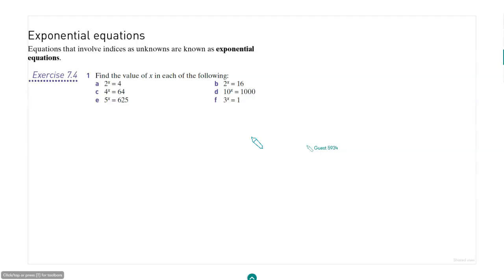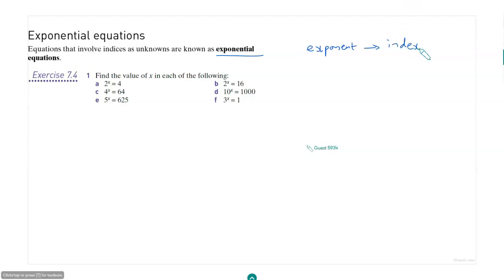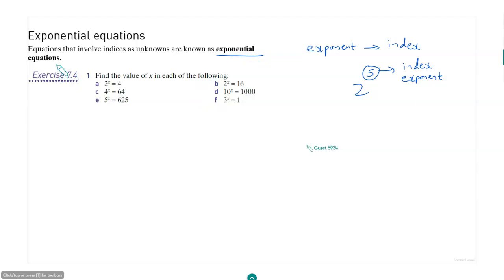Now, why is it called exponential equations? The word 'exponential' contains the word 'exponent,' and exponent is another word for index. So when you say 2 to the power 5, the 5 is called the index — and 5 is also called the exponent. Exponent is just another word for index, and that's why these are called exponential equations.